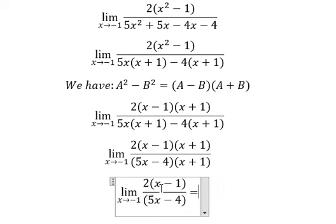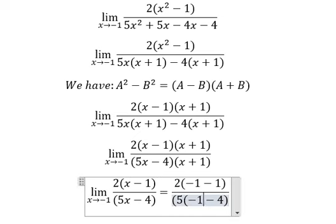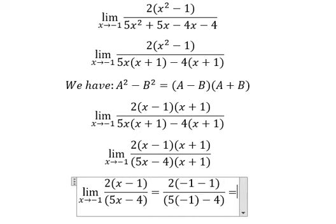And then we put negative one in here and here, substituting x = -1. So we calculate this and we have 4 over -9.